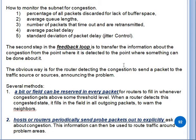Other methods include reserving a bit or field in every packet. When congestion is detected, the router fills this bit in the outgoing packet to warn neighbors that congestion has been generated. Also, hosts and routers periodically send probe packets explicitly to detect congestion. This information is very helpful to route traffic around problem areas, and neighboring routers can be informed to help solve the problem.